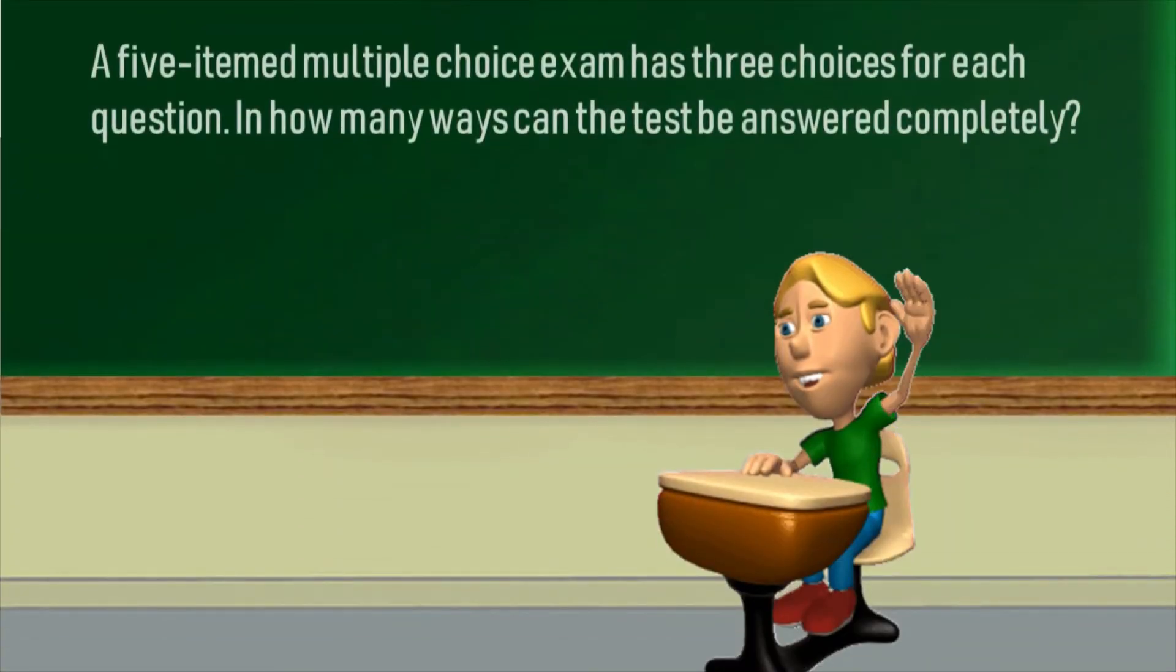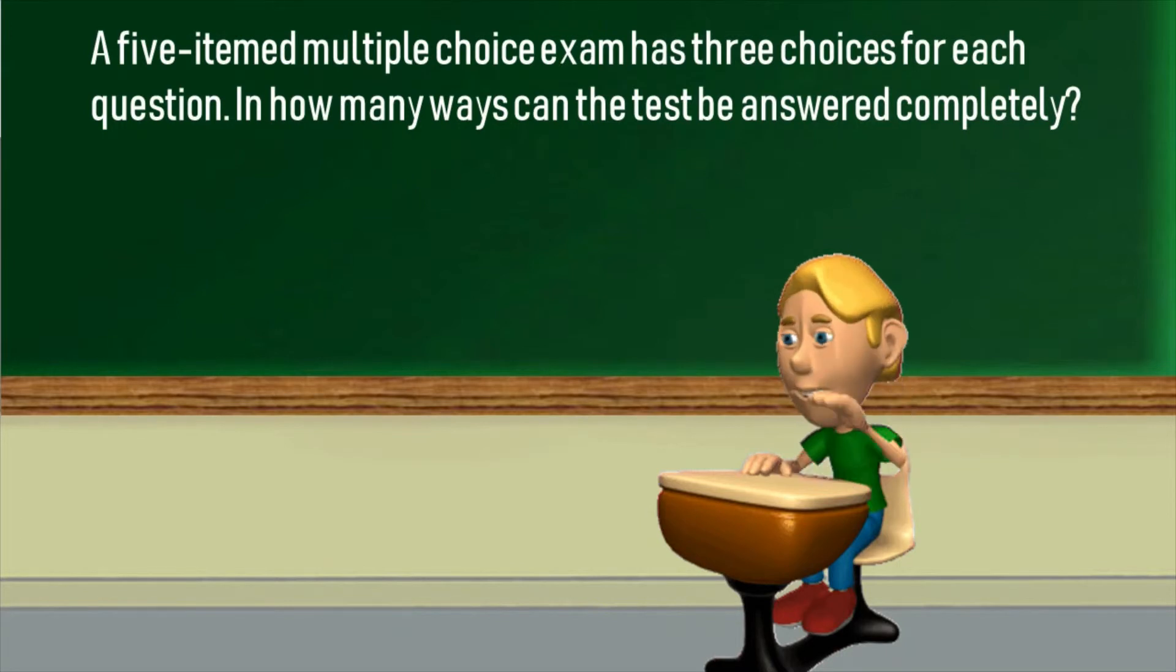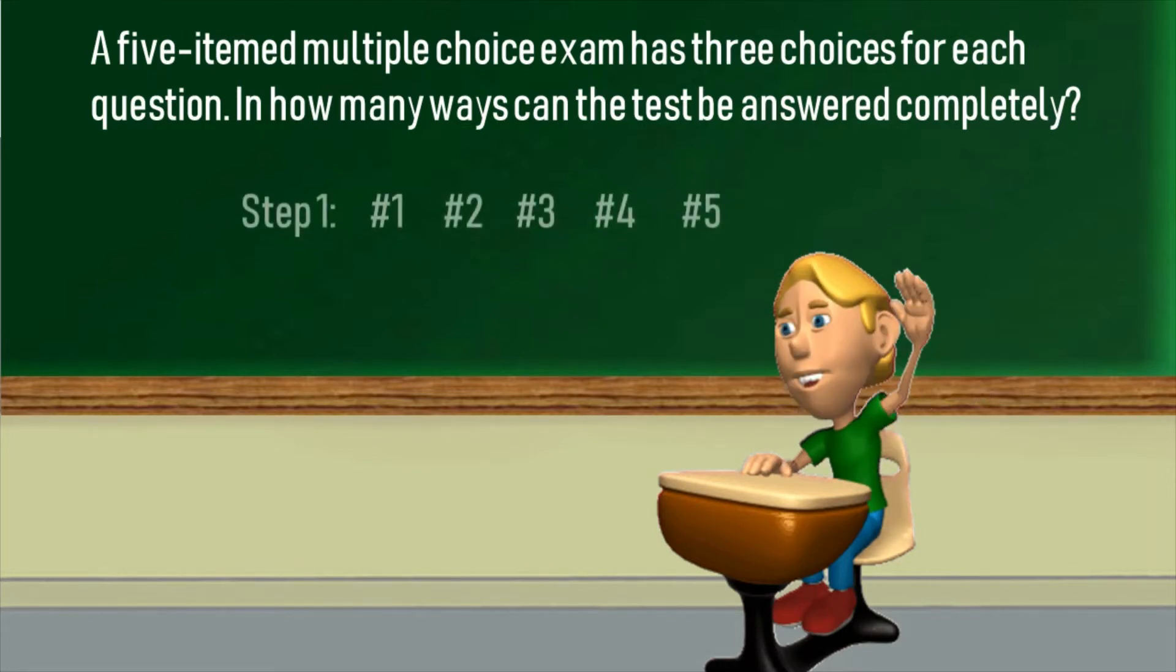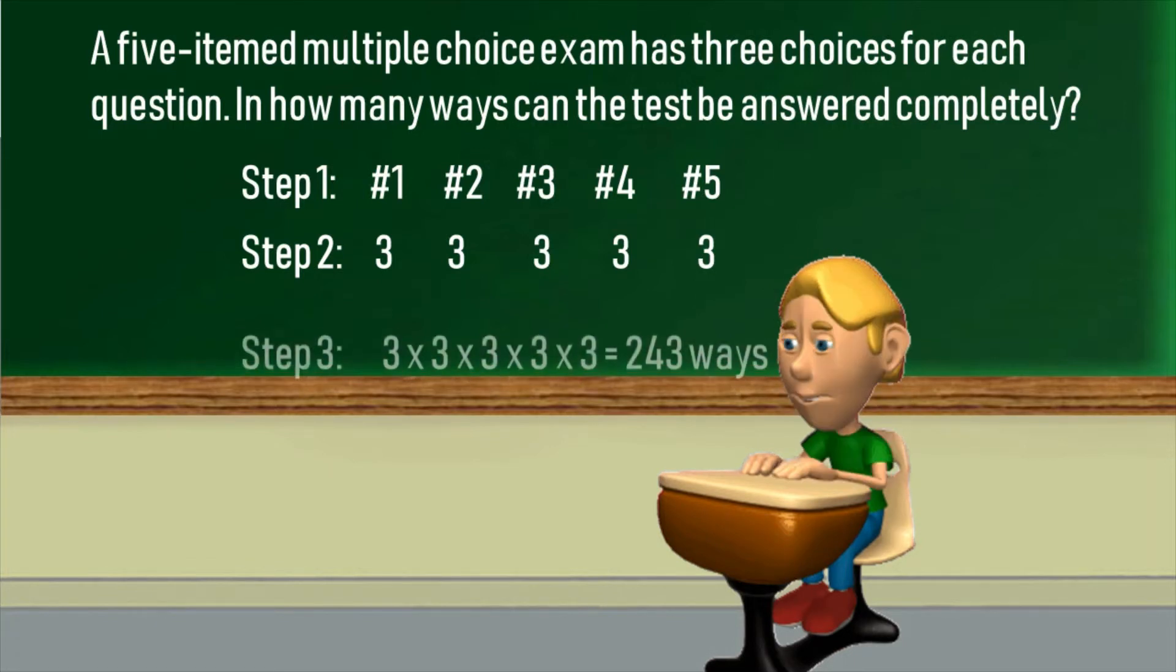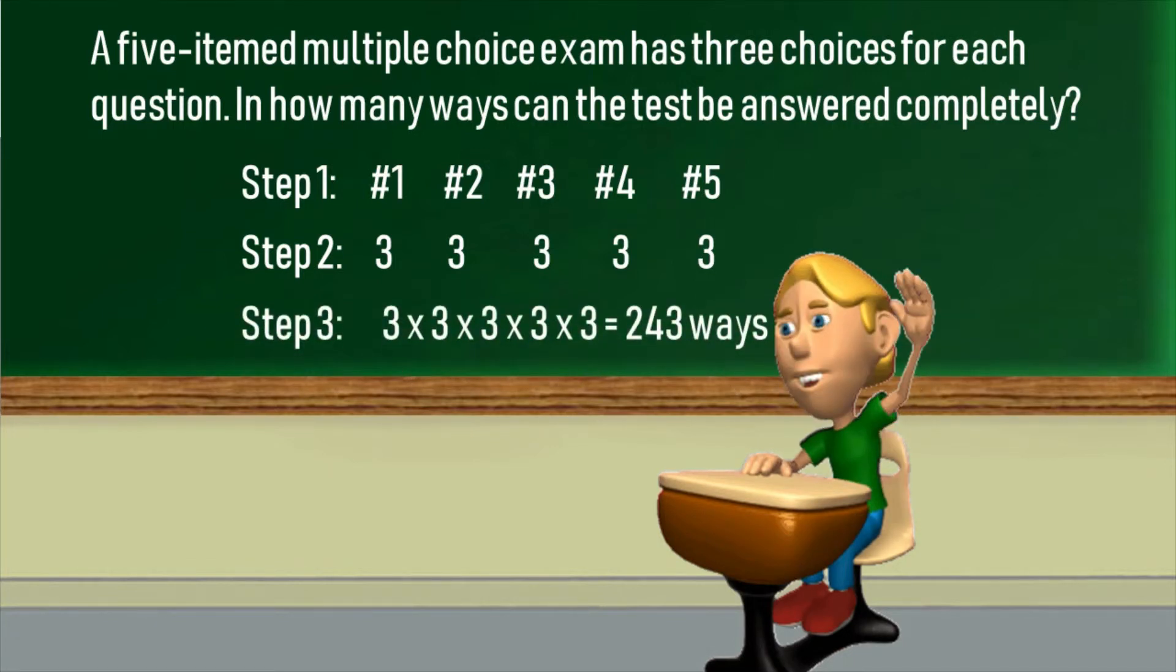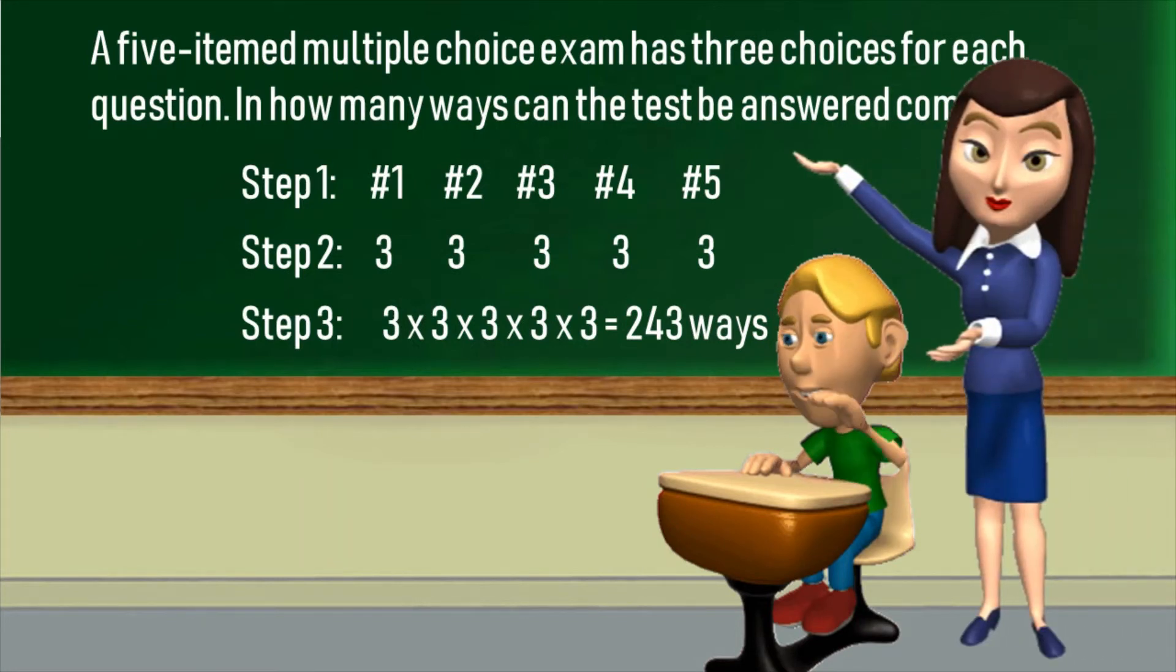Problem: A five-item multiple choice exam has three choices for each question. In how many ways can the test be answered completely? In step one, there are five items to be answered. In step two, there are three options for each question. In step three, multiplying them all will give 243 ways to complete the exam, teacher. Very good.